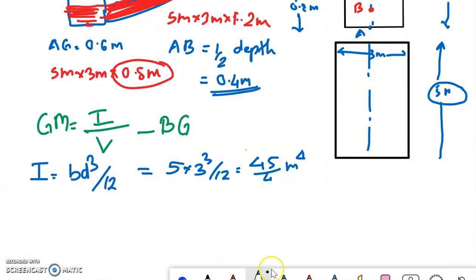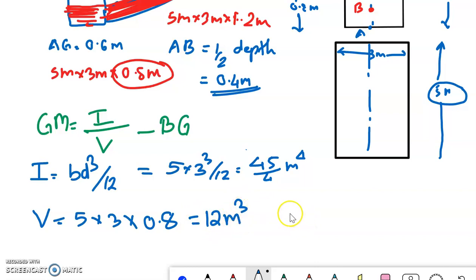Volume of pontoon in water is 5 into 3 into 0.8 meter, that is 12 meter cube. BG is AG minus AB, that is equal to 0.6 minus 0.4, that is equal to 0.2 meter.